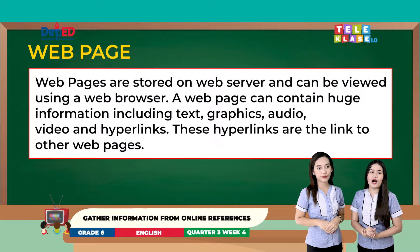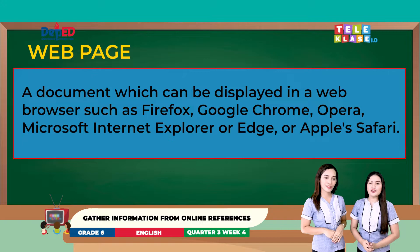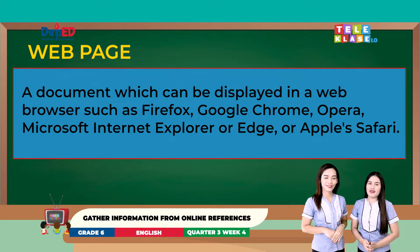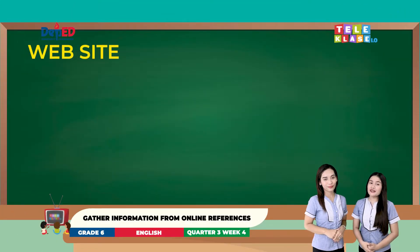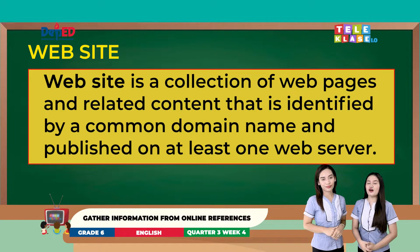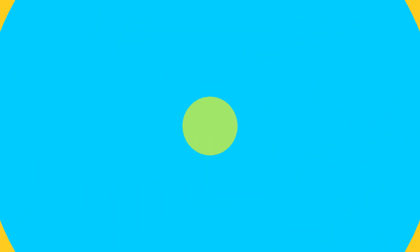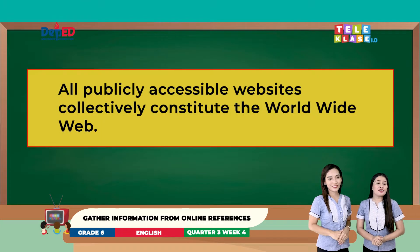These hyperlinks are the link to other web pages. It is a document which can be displayed in a web browser such as Firefox, Google Chrome, Opera, Microsoft Internet Explorer or Edge, or Apple Safari. Meanwhile, a website is a collection of web pages and related content that is identified by a common domain name and published on at least one web server. Notable examples are Wikipedia.org, Google.com, and Amazon.com. All publicly accessible websites collectively constitute the world wide web.